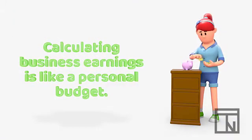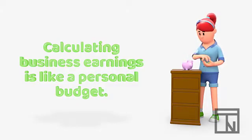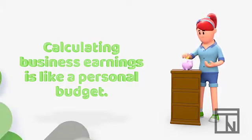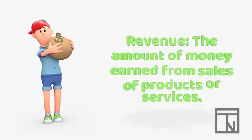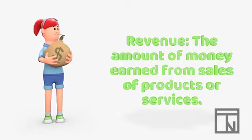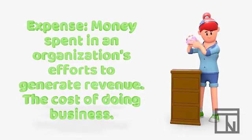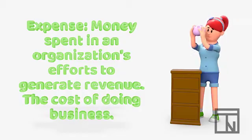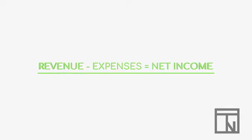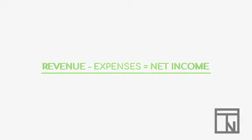Calculating how much a business makes is very similar to calculating a personal budget. You start with the total amount of money a business earns and subtract from that the total amount of money a business spends. The amount of money a business earns from the sale of its products or services is called revenue. The amount of money a business spends in its efforts to generate revenue — in other words its cost of doing business — is called expenses. So in accounting terms, if you start with total revenue and subtract total expenses, you will know how much money a company makes for that period of time.